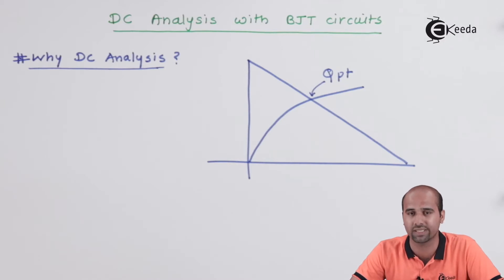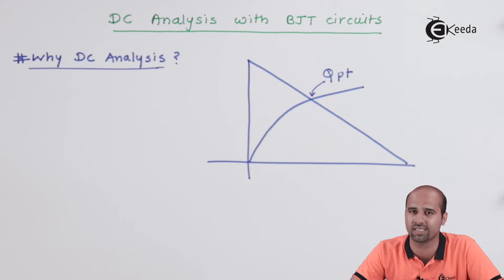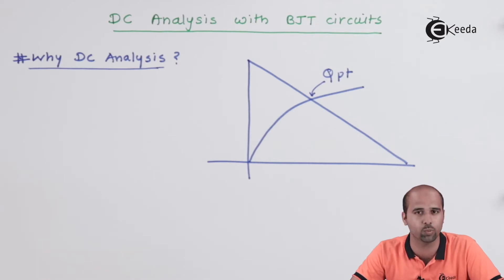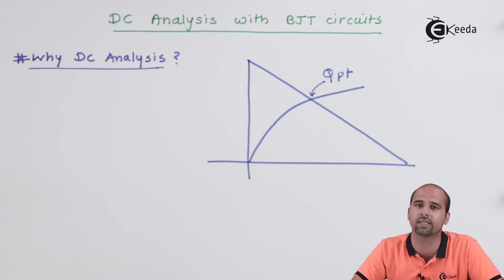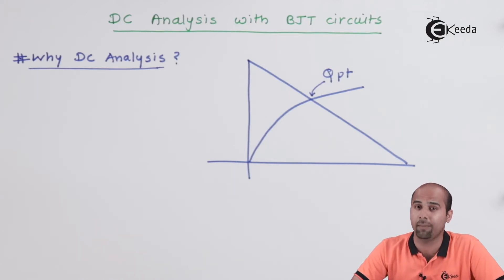We have to learn what is the position of the Q point — the reference point from where we will get the amplified output without clipping. That is important from the amplifier point of view.